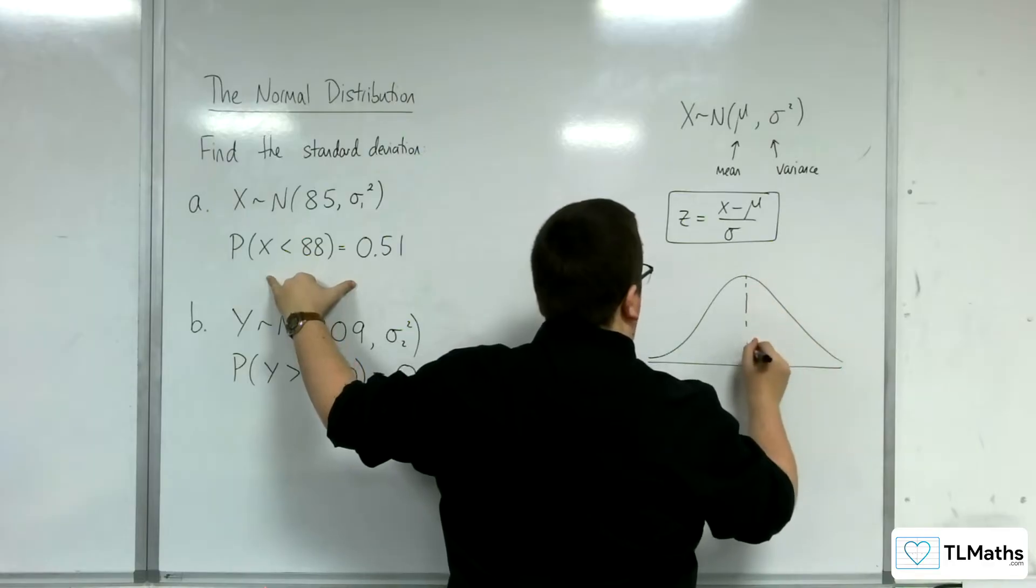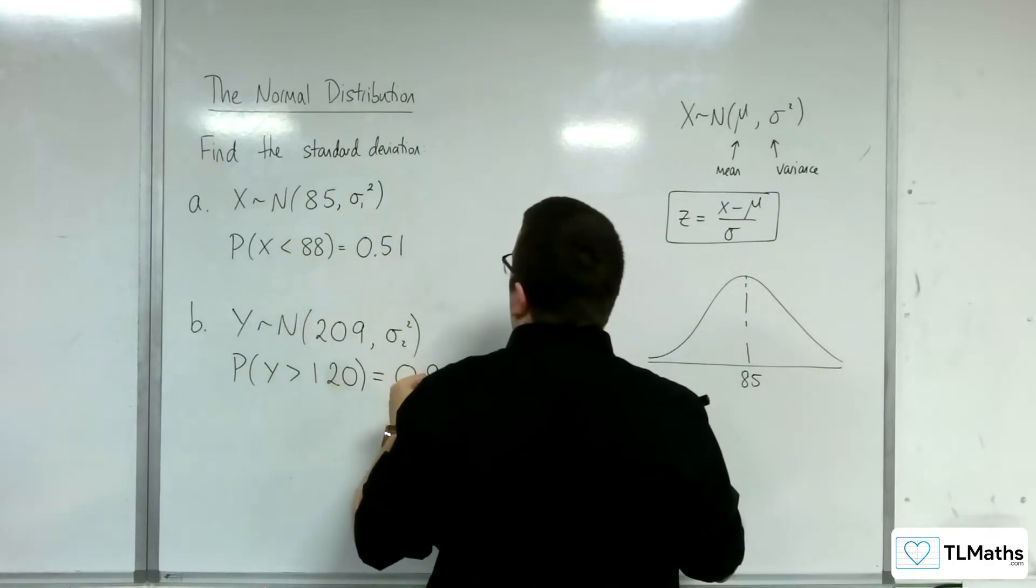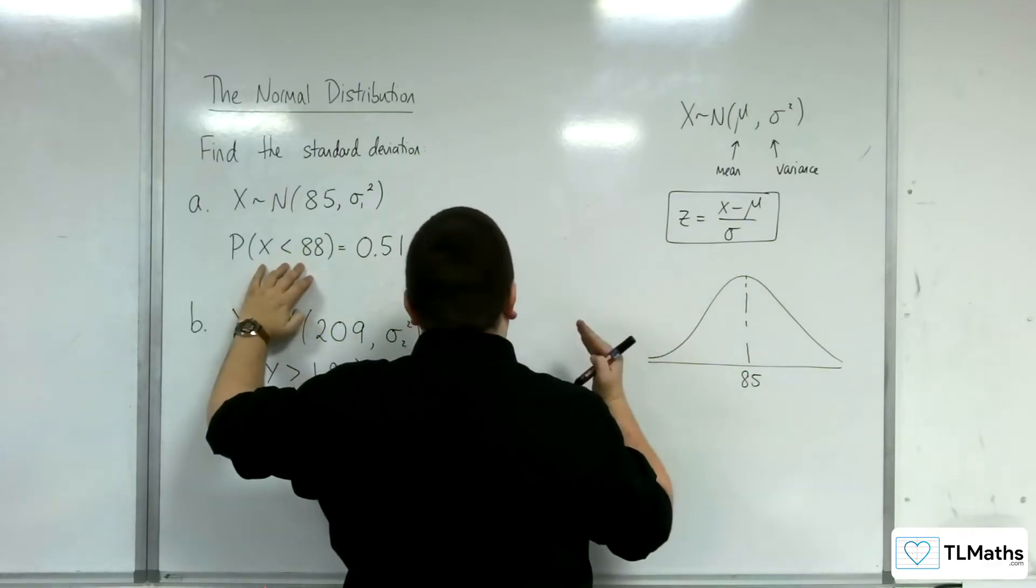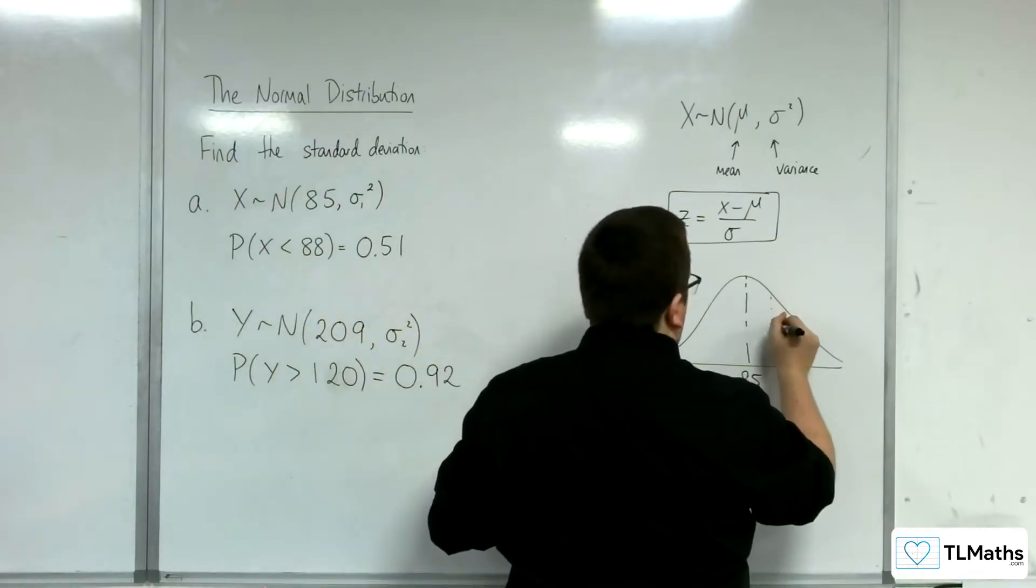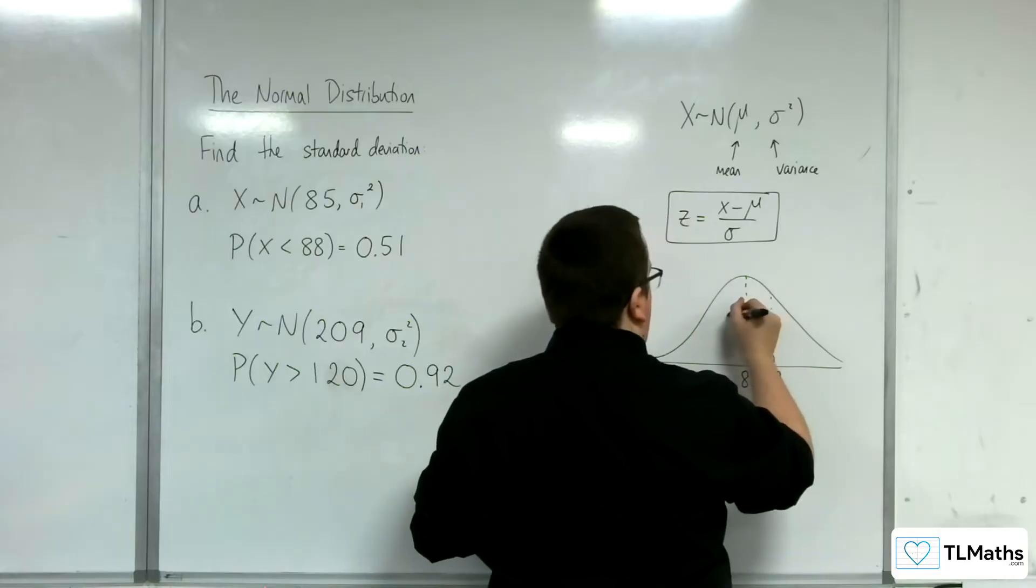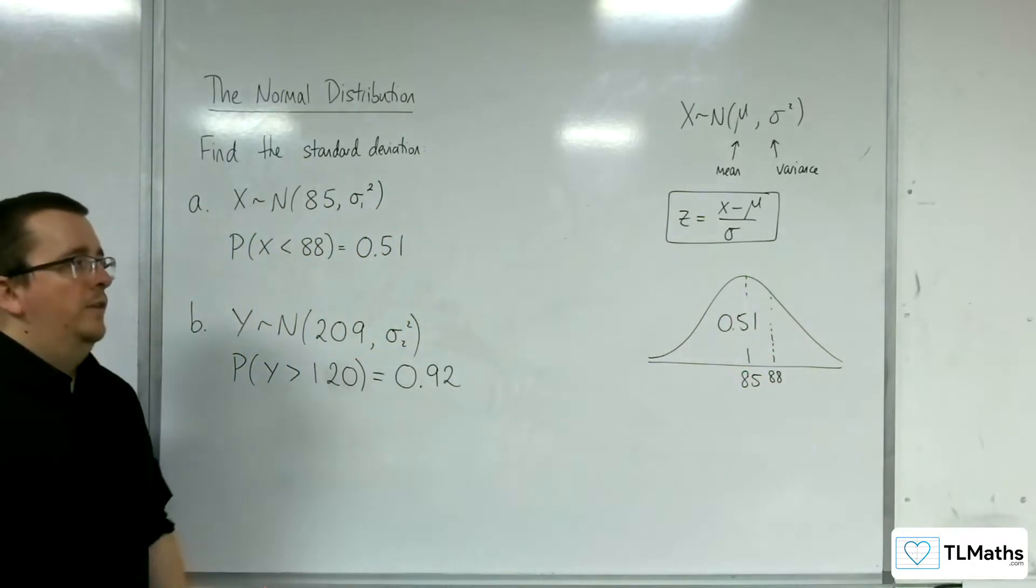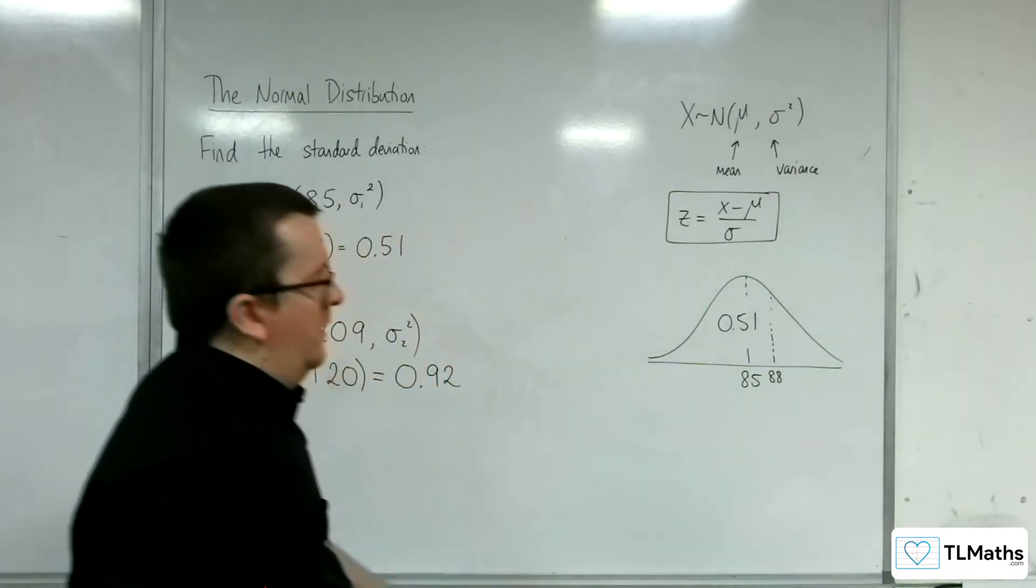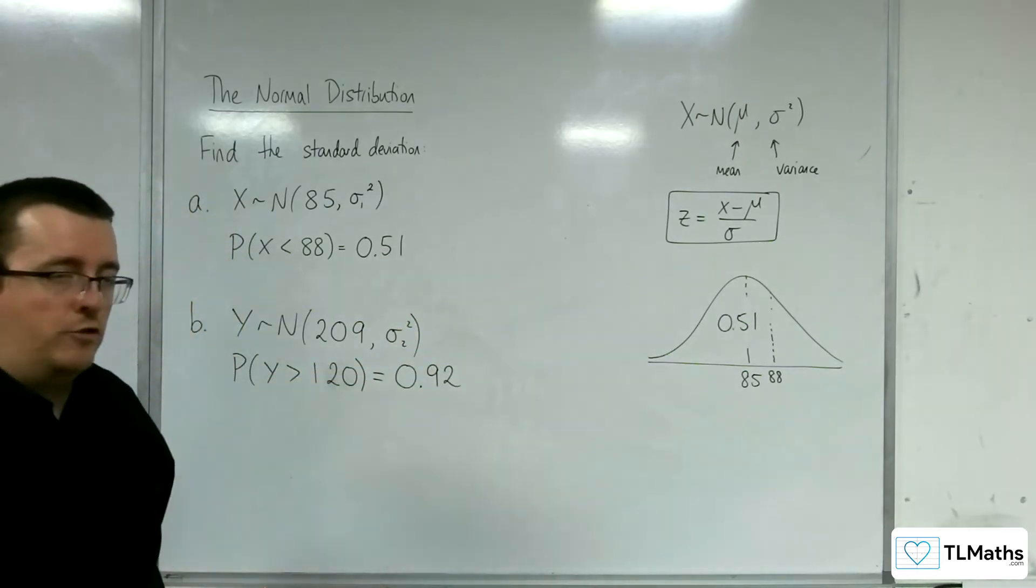We know the mean this time. The mean is 85. And we know that the probability of x being less than 88, so to the left of 88, is 0.51. So that's 88. This is 0.51. 51% of the graph. Now, I can't quite draw it accurately, so that will just have to do. Remember, it's just a diagram.